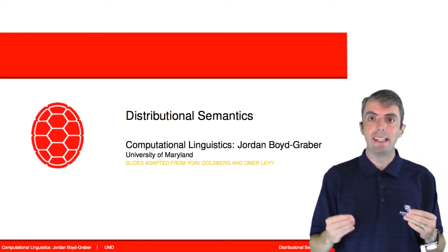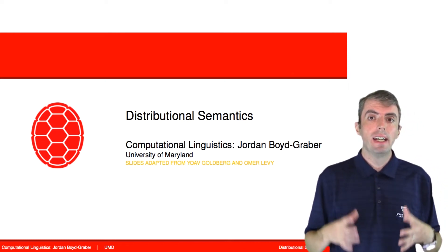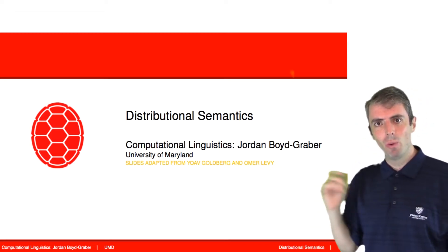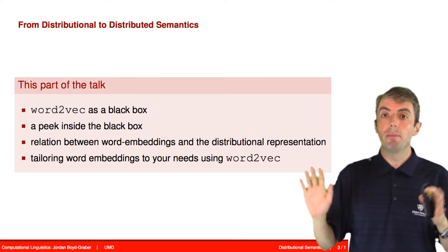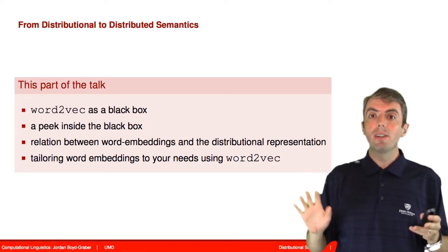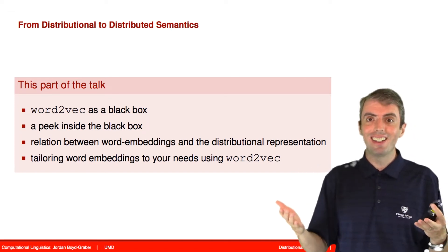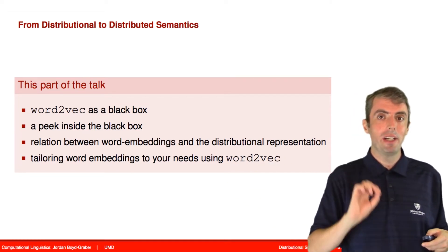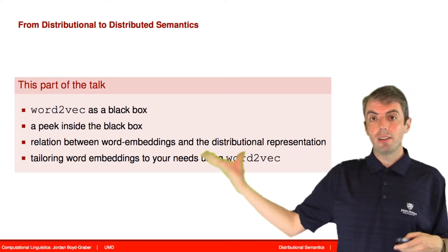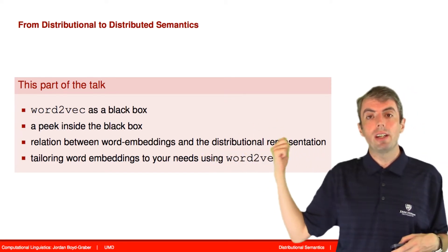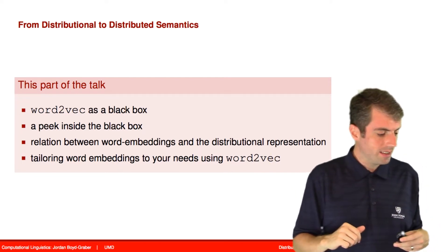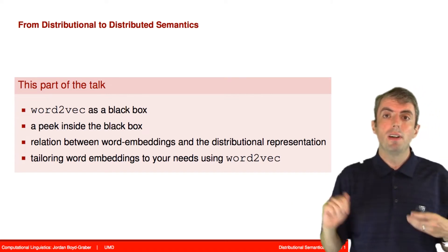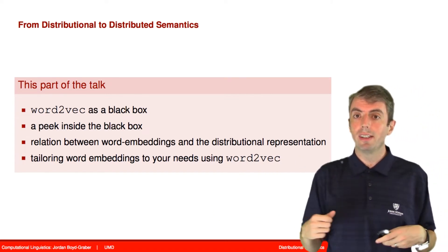Last time we talked about embeddings and word representations generally. Today we're going to focus a bit more on a specific example of embeddings: Word2Vec. Most people treat Word2Vec as a black box, and that's fine. Word2Vec is very useful on its own, and you don't necessarily need to understand how it works to use it. It's very useful as a feature representation. But today we'll talk about Word2Vec so you can understand its intuitions and why it might fail in specific cases. We'll also discuss the relationship between Word2Vec and other forms of distributional semantics and how to represent words in a continuous space.